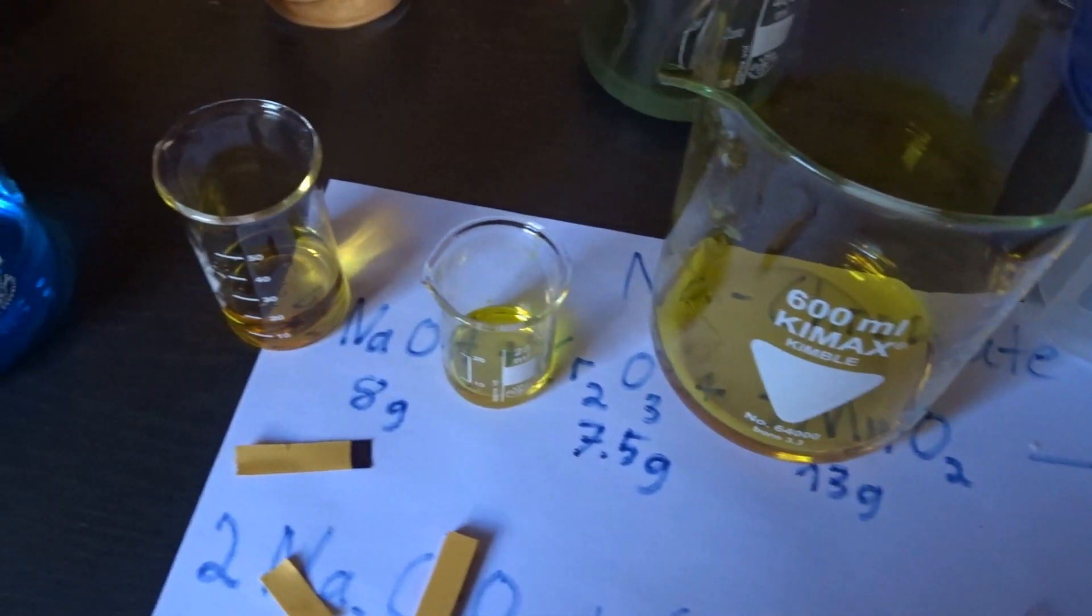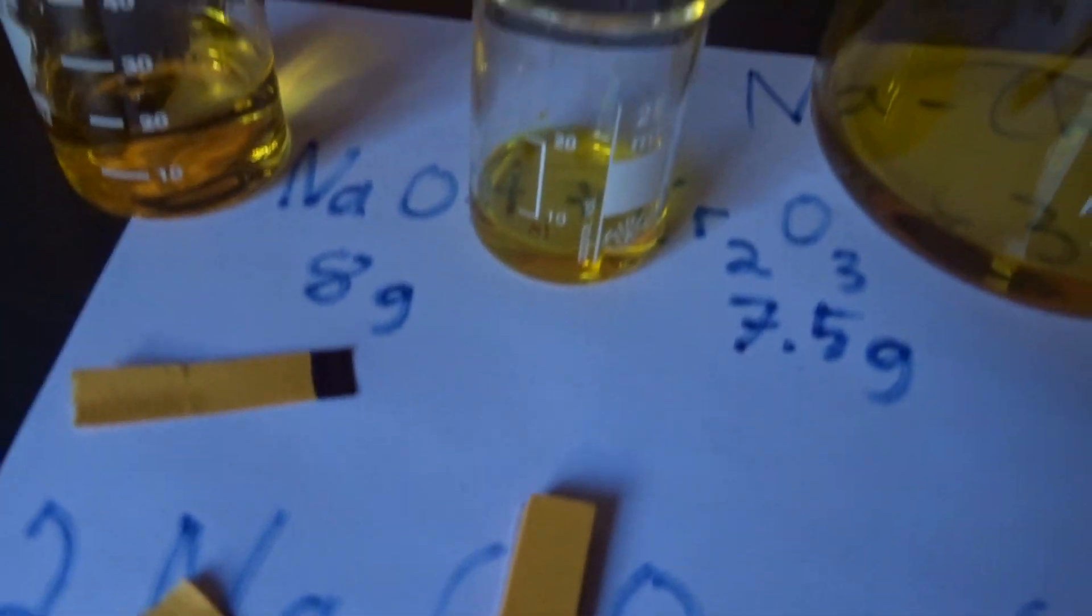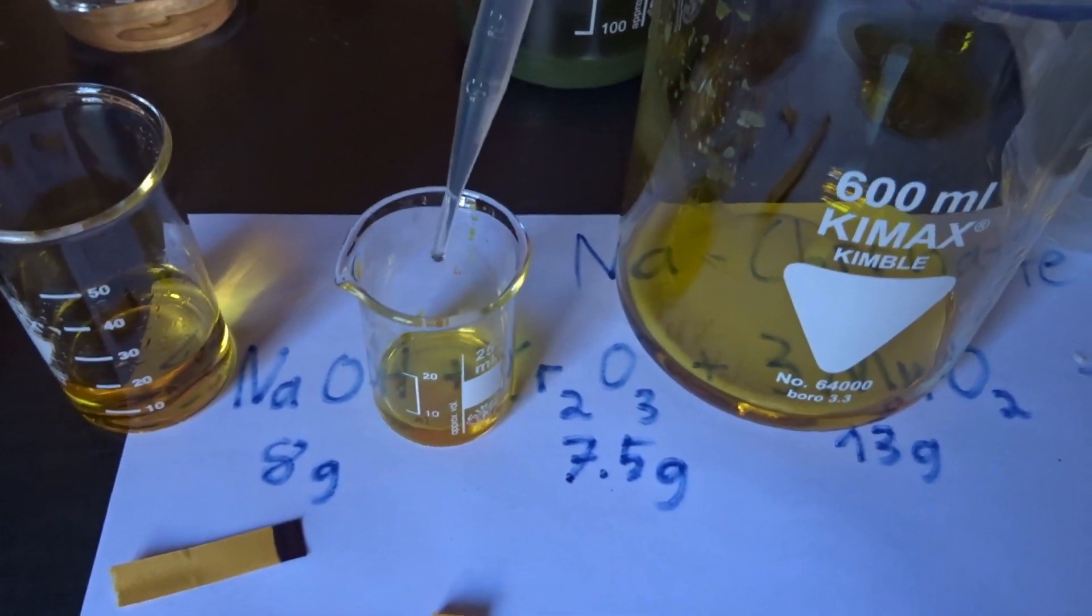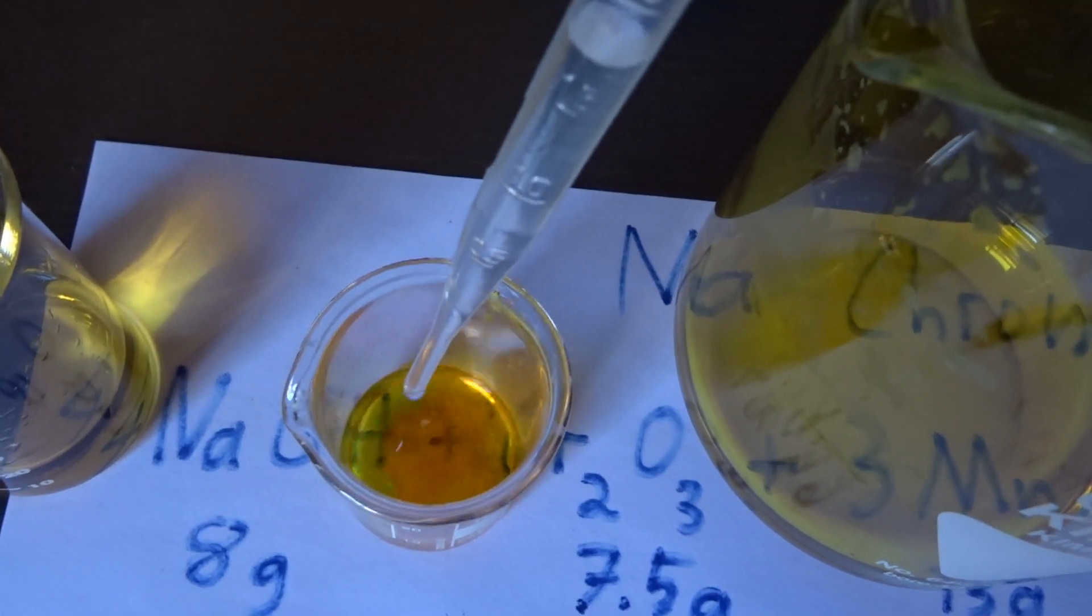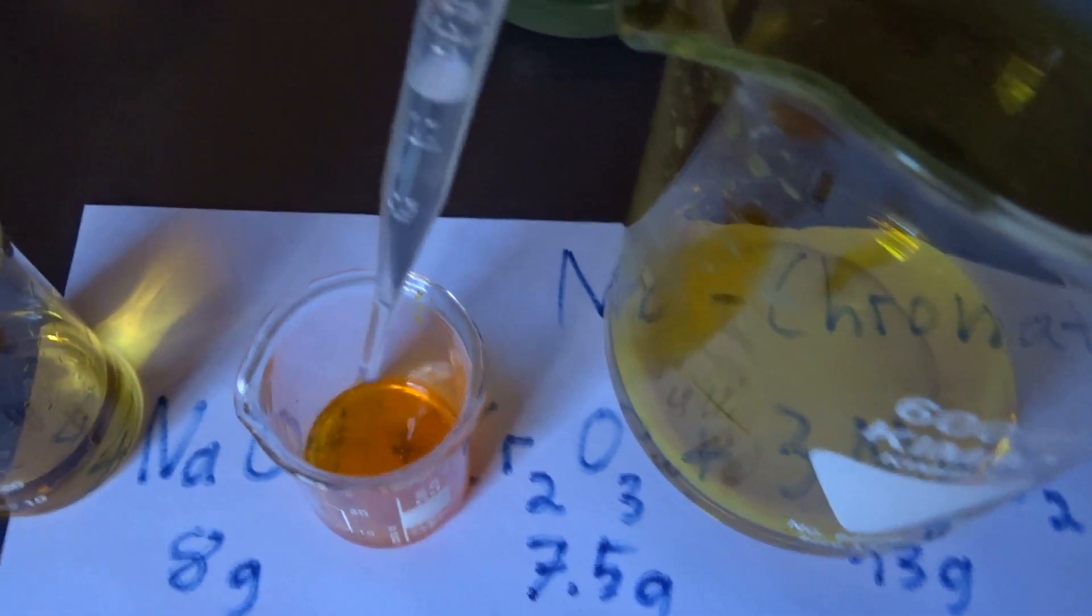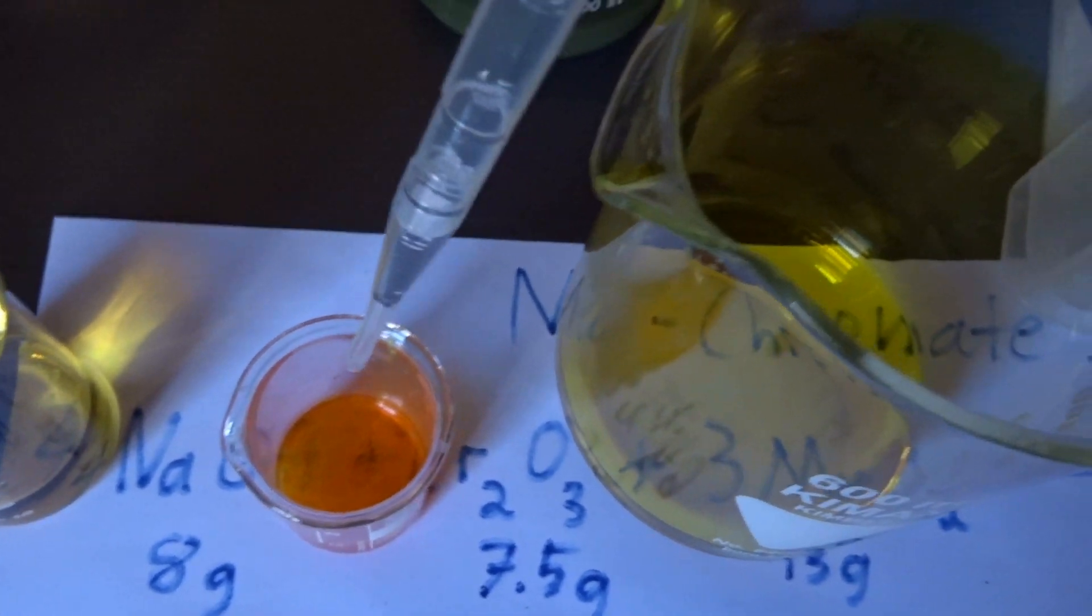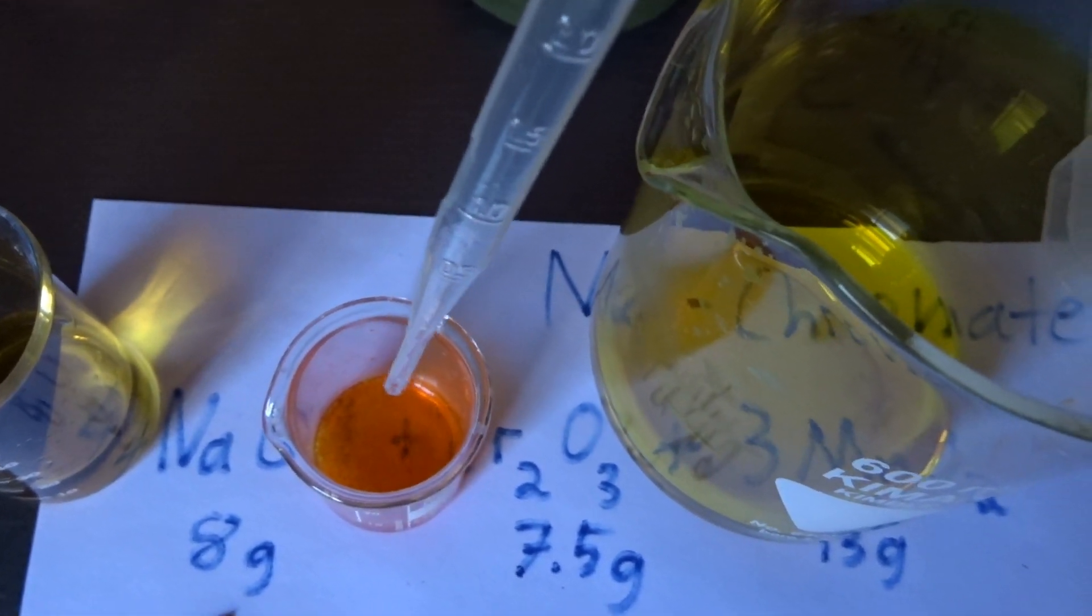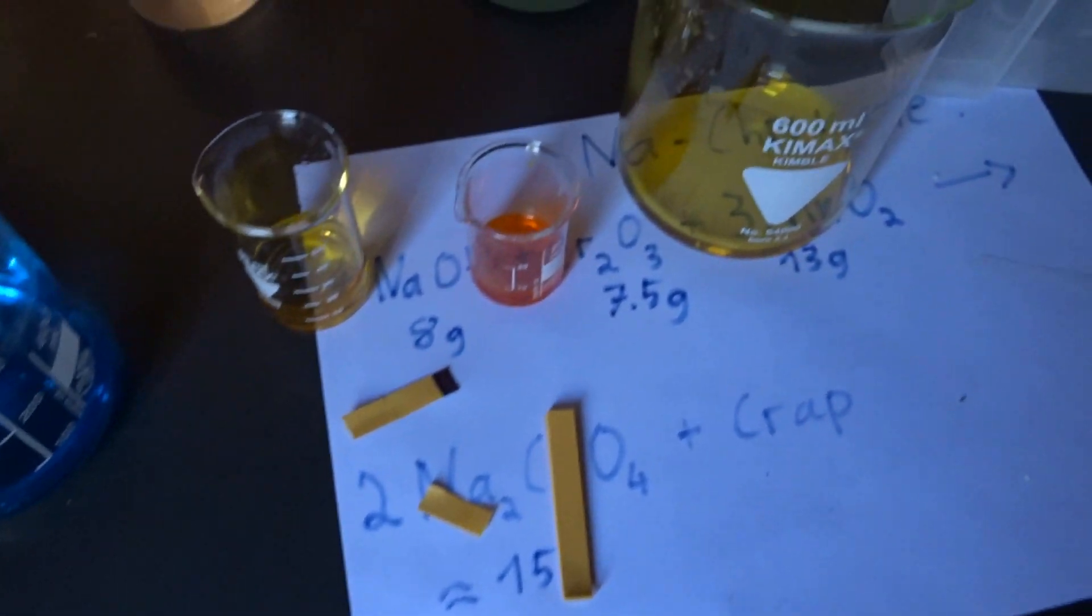But first I want to demonstrate the chromate dichromate transition on this little example. So I'm slowly going to add some sulfuric acid and you'll immediately see the color change forming dichromate. And probably some CO2 gassing out. Maybe some carbonate made it in there. I don't know.